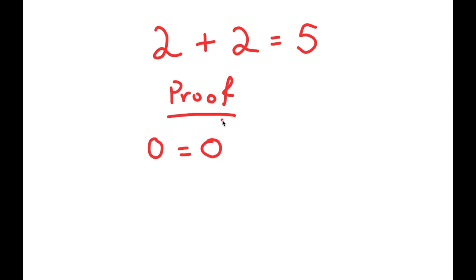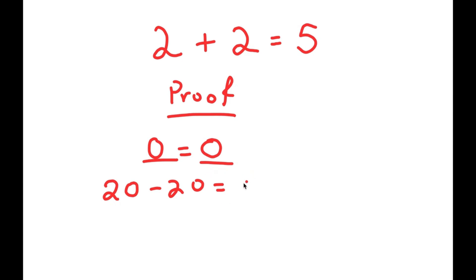From here, I'm going to rewrite 0 on my left-hand side as 20 minus 20, and rewrite the 0 on my right-hand side as 25 minus 25. So now I get 20 minus 20 is equal to 25 minus 25, which is again a true statement because 20 minus 20 is 0 and 25 minus 25 is also 0.